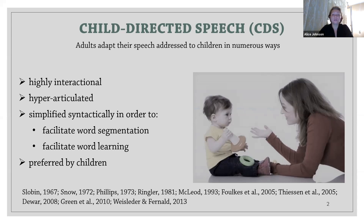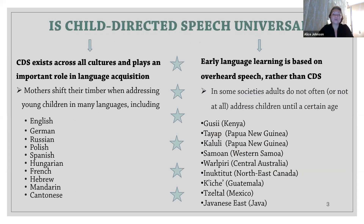Adults adapt their speech addressed to children in numerous ways. Child-directed speech tends to be highly interactional, hyper-articulated, syntactically and lexically adapted for young listeners, and preferred by them. Many researchers propose that child-directed speech exists universally across all cultures. Among the recent works is the study from Princeton University by Piazza and colleagues, which examined child-caregiver pairs that spoke 10 different languages, and found that in all the languages mothers consistently shifted their timbre between adult and child-directed speech, and that their shift was similar across languages, which suggests that such alterations may be universal.